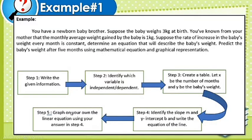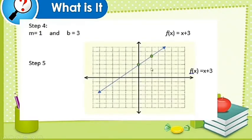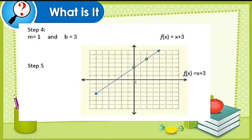Step 5: Graph on your own the linear equation or linear function using your answer in step 4. So this is our graph. Zero months, at zero months there's already 3 kilograms. When the baby is 2 months, there's already a weight of 5 kilograms.